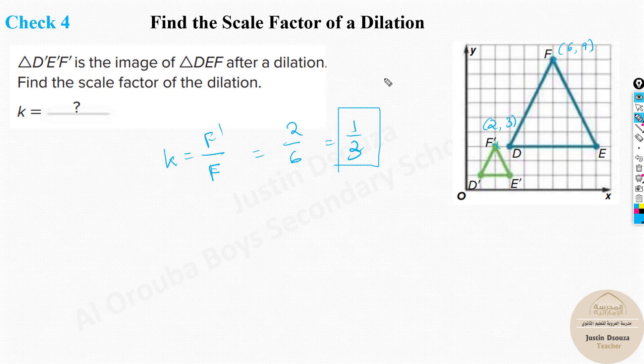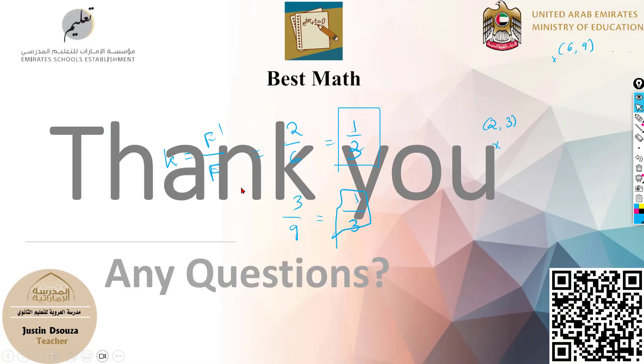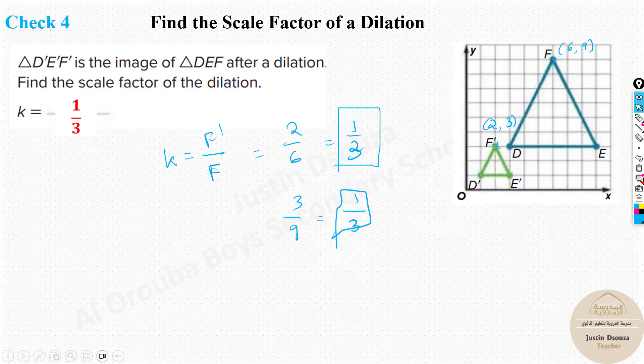This is the answer, it is one third. Now what about the other one? Y coordinate will be 3 divided by 9, 3 goes in it, it's one by three. And this is the answer, it's one third and one third. So the scale factor over here will be one third or 0.33.